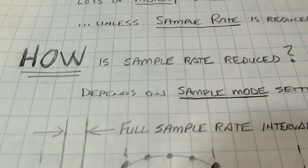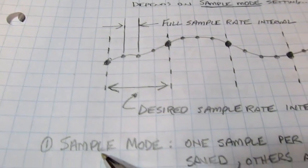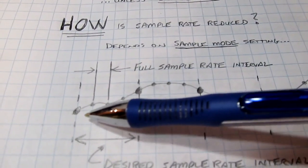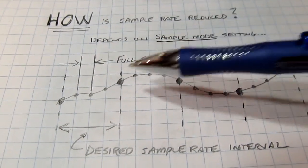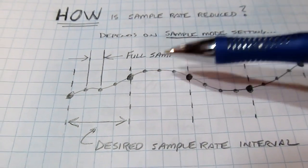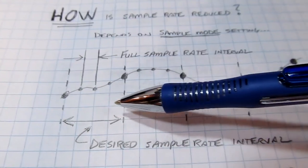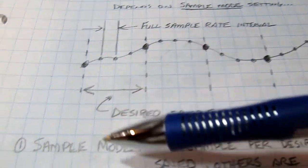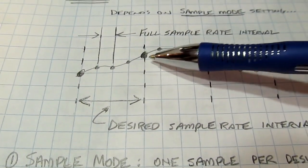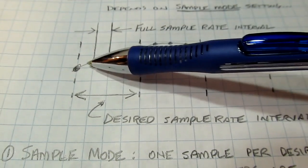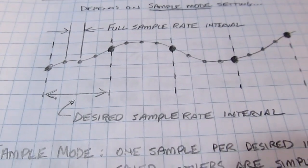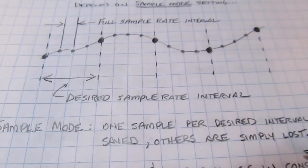The most common method is called sample mode or normal mode. Consider an analog waveform coming in where the raw sample rate is sampling every division, but you only need every fourth point. Sample mode typically takes just one point out of that whole desired sample interval and saves it — maybe this one, and this one, and throws away the rest. It's a process called decimation, and that's typically how it works.